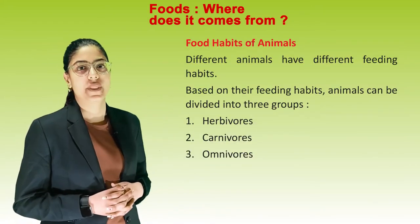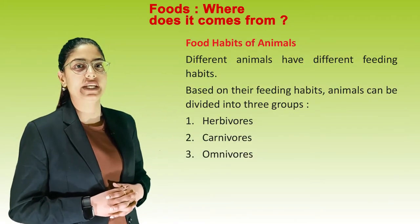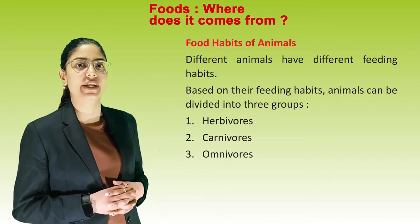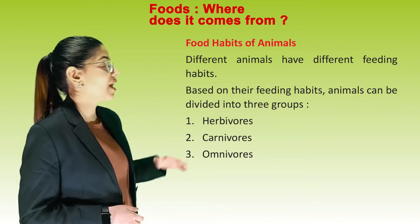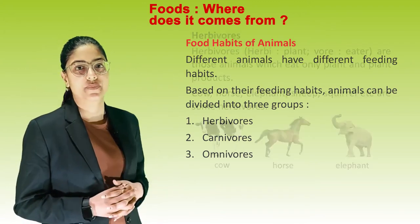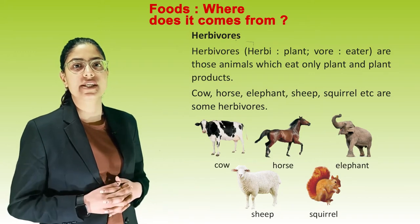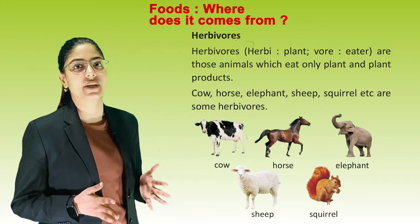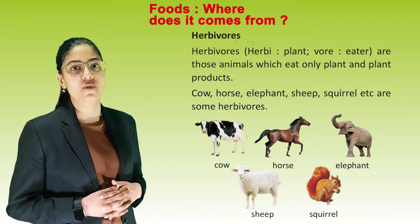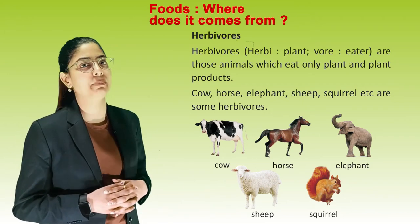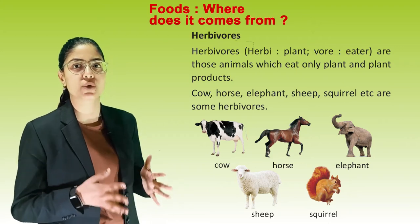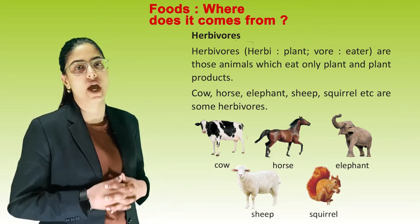Food habits of animals. Different animals have different feeding habits. Based on their feeding habits, animals can be divided into three groups: herbivorous, carnivorous, and omnivorous. Herbivorous animals - 'herbi' means plant, whereas 'vore' means eater. These are animals which eat only plants and plant products. Cow, horse, elephant, sheep, and squirrel are some herbivorous animals.